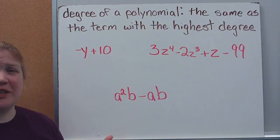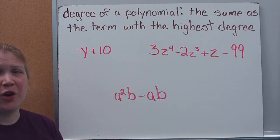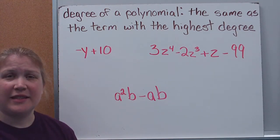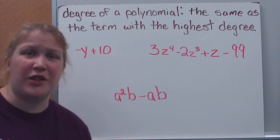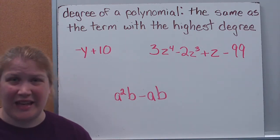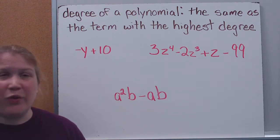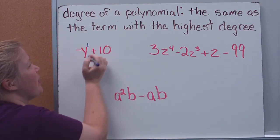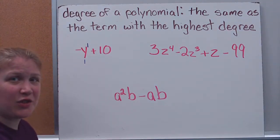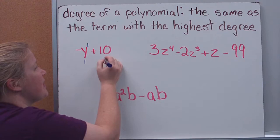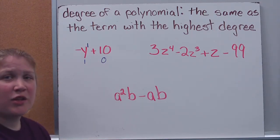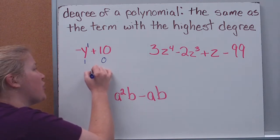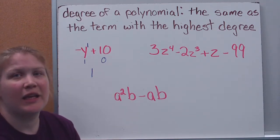Now that we can determine the degree of the term, we can determine the degree of the polynomial. This is simply the same as the term — the monomial — with the highest degree. So we're going to look at the degrees of each of the terms. Here I have a y, so remember there's an implied 1 — that has a degree of 1. This doesn't have a variable, so it has a degree of 0. The term with the highest degree is 1, which means the degree of the polynomial is 1.